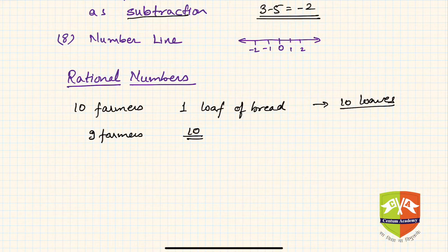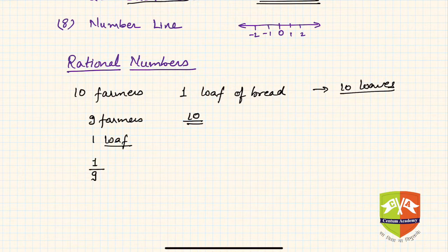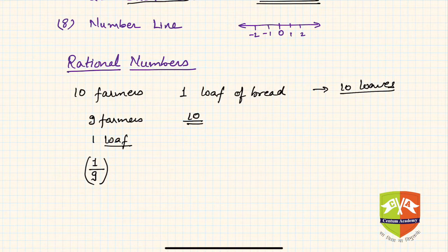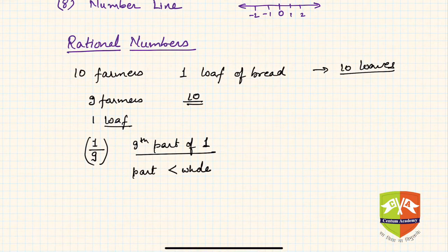Later, they came up with a solution: each farmer gets one whole loaf, and the last loaf is divided into 9 parts, with each part distributed to each farmer. This introduced a new concept — a number that is a part of a whole. For example, one-ninth is the ninth part of one loaf, which is less than the whole bread itself.